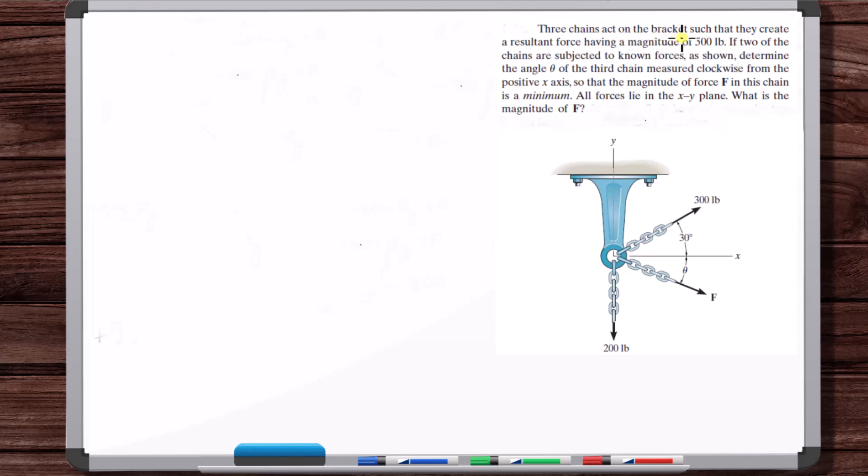Three chains act on the bracket such that they create a resultant force having a magnitude of 500 pounds. If two of the chains are subjected to known forces as shown, determine the angle theta of the third chain measured clockwise from the positive x-axis so that the magnitude of force F in this chain is a minimum. All forces lie in the XY plane. What is the magnitude of F?